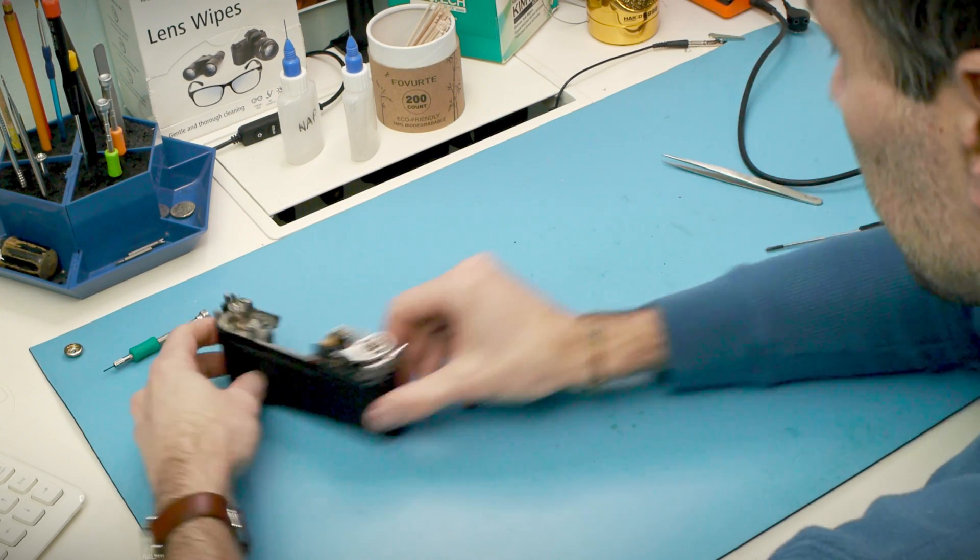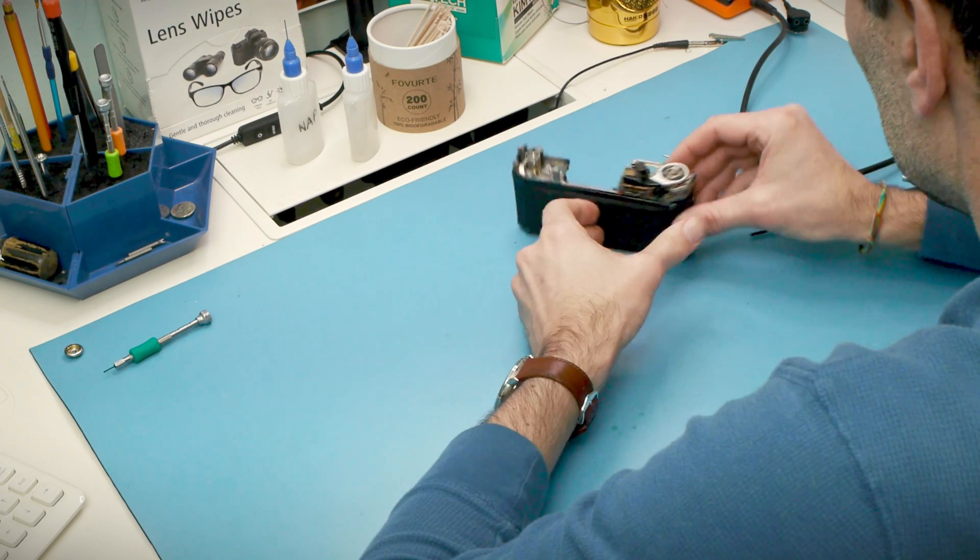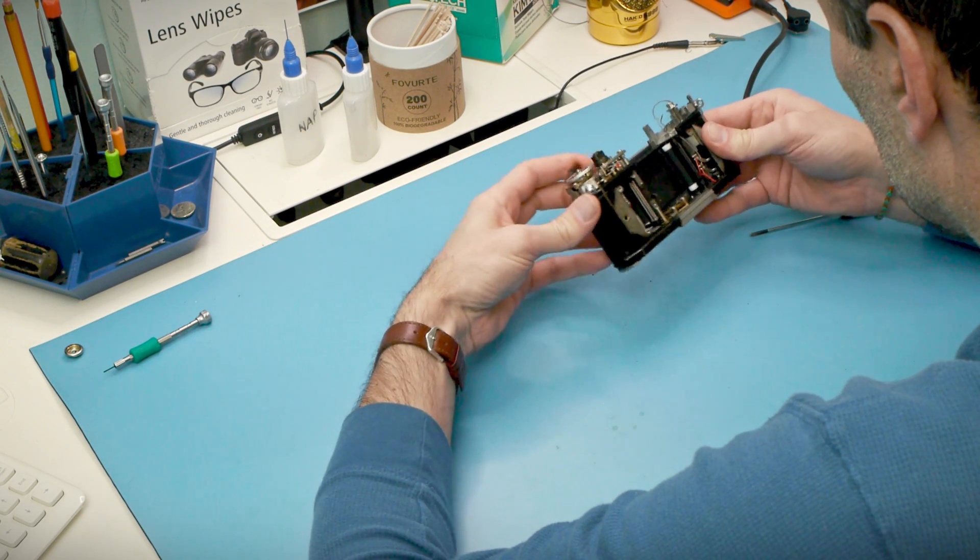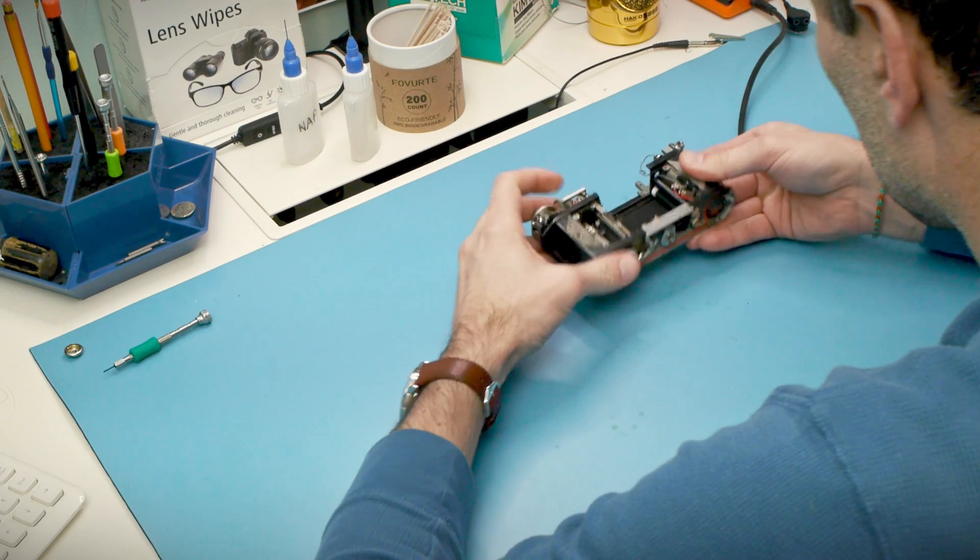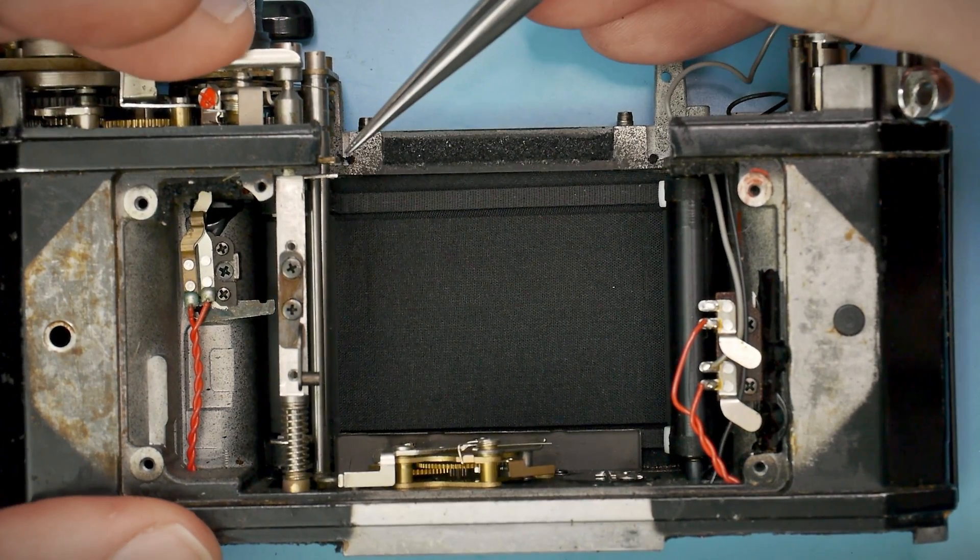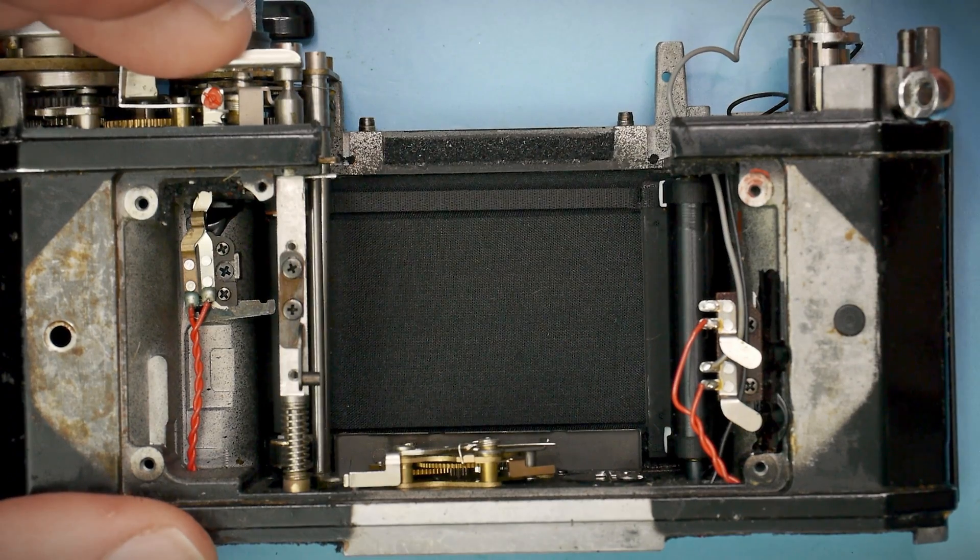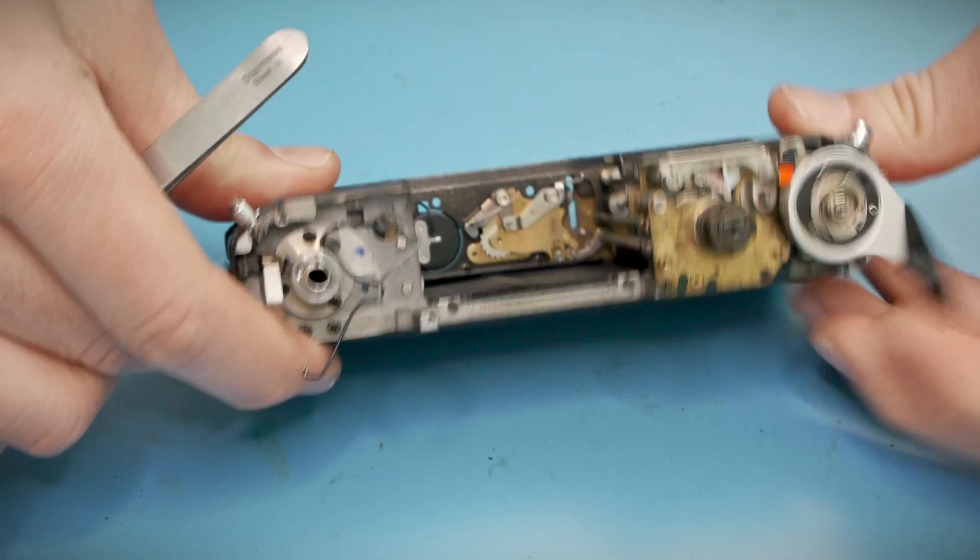And finally, I'll take a look at the shutter with the mirror box out of the camera. The only trick here is that since the mirror box is gone, it can no longer do the job of starting the shutter. So I have to both push the release button and trip the first curtain latch. As for why I have to do both, well, that's a topic for a later video.